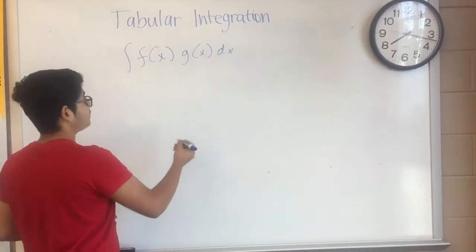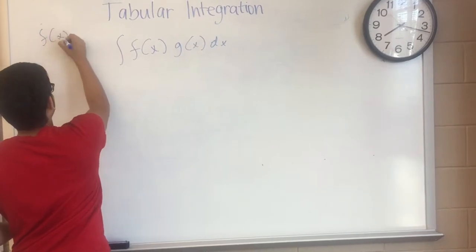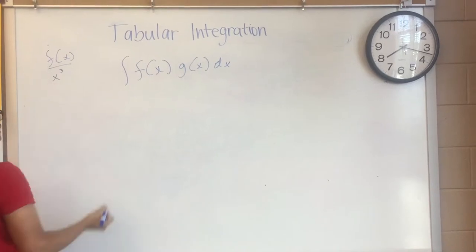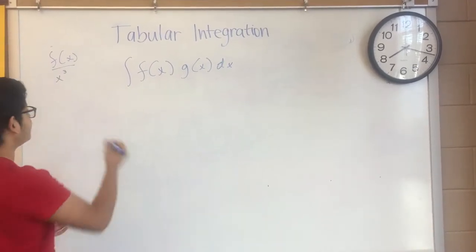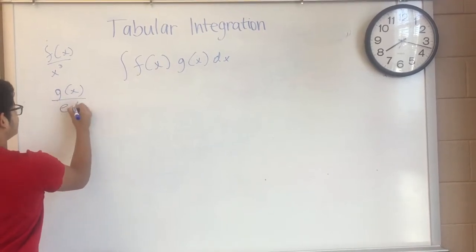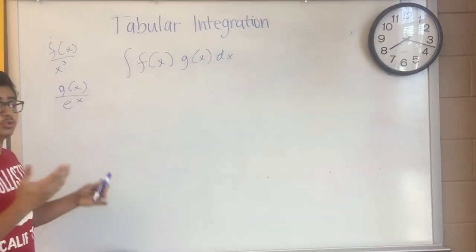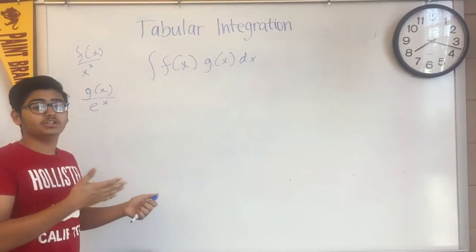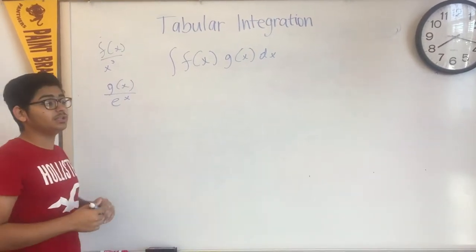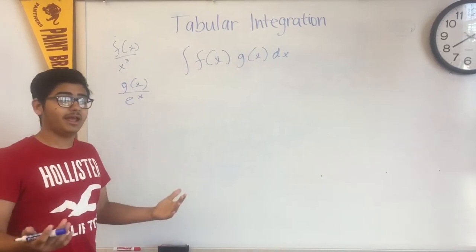For example, f can be equal to x cubed, and g of x can be equal to e to the x. If you look at x cubed, we can continuously take the derivative of x cubed until it eventually reaches zero. However, for e to the x, we can continuously integrate e to the x and it will still remain as e to the x.